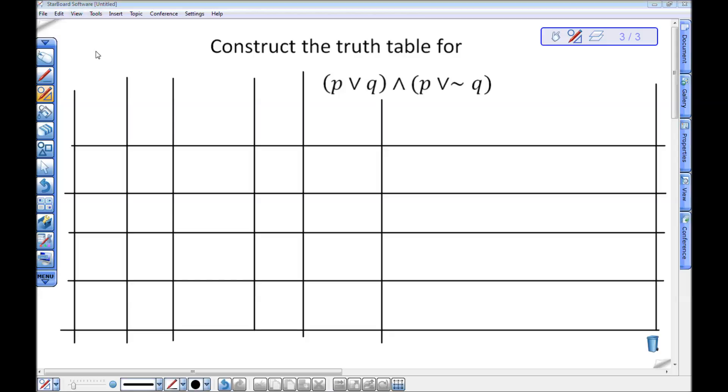Let's look at making a truth table for this statement. I have P or Q and P or not Q. So I can see that I have two unique statements, P and Q. So I need 2 to the second or 4 rows. I've got 4 rows here.